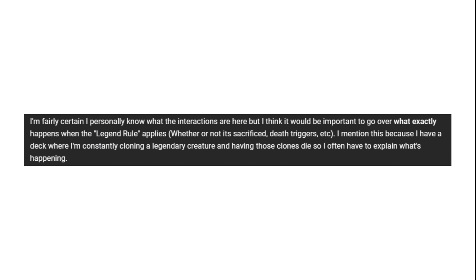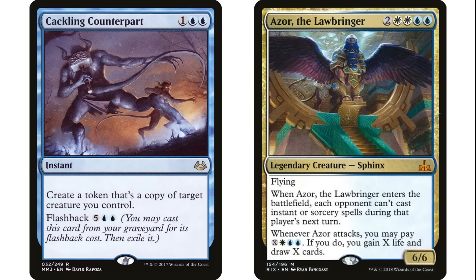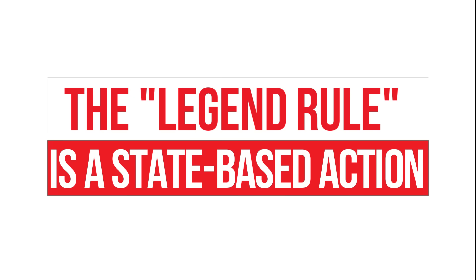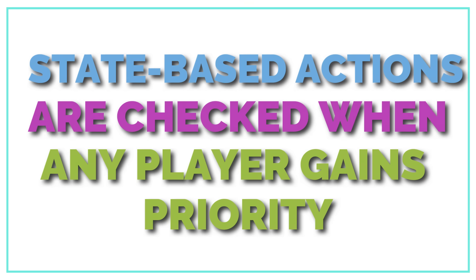It's important to cover what happens when the legend rule applies — whether there are sacrifice triggers, death triggers, etc. When I create a token copy of my commander, the token enters the battlefield and any ETB effect triggers. However, the legend rule is a state-based effect, which means it happens immediately as soon as anyone has priority. Someone claimed state-based effects are only checked when the stack is completely clear — that is absolutely not how Magic is played. The stack does not need to be empty for state-based effects to happen.